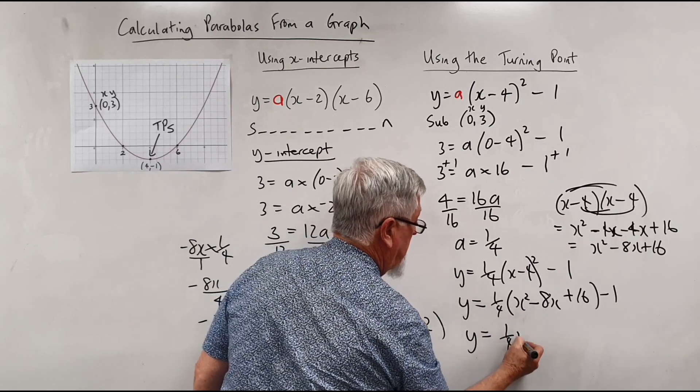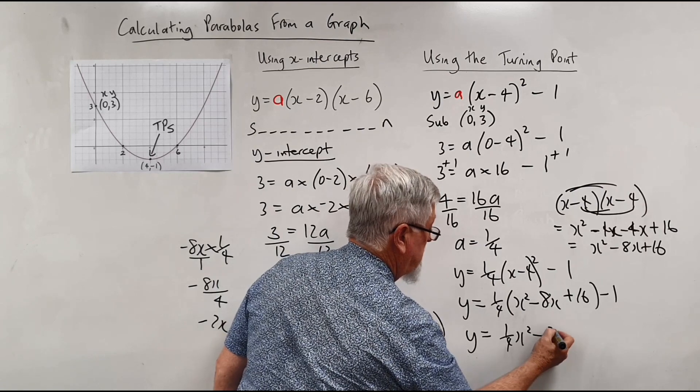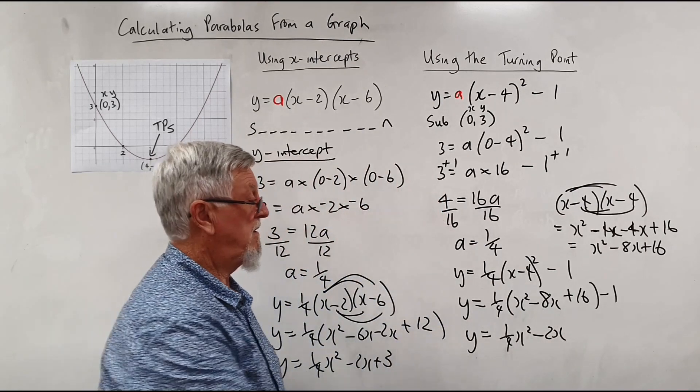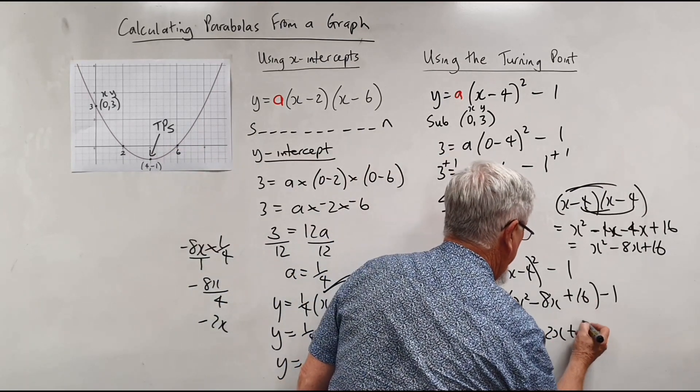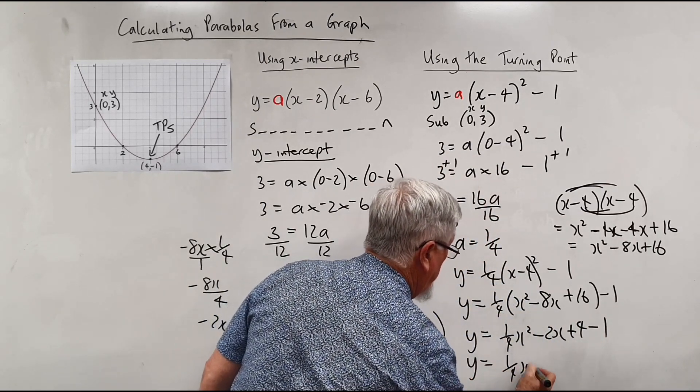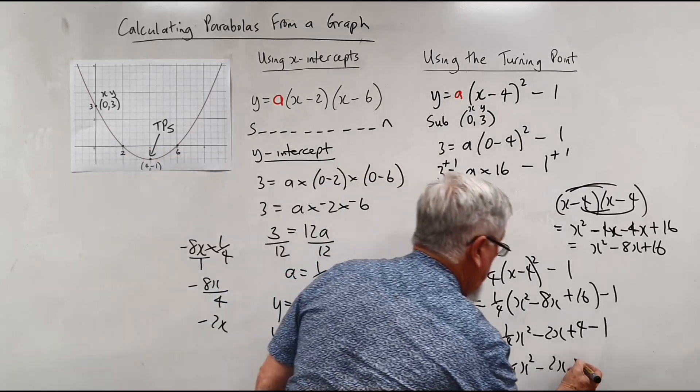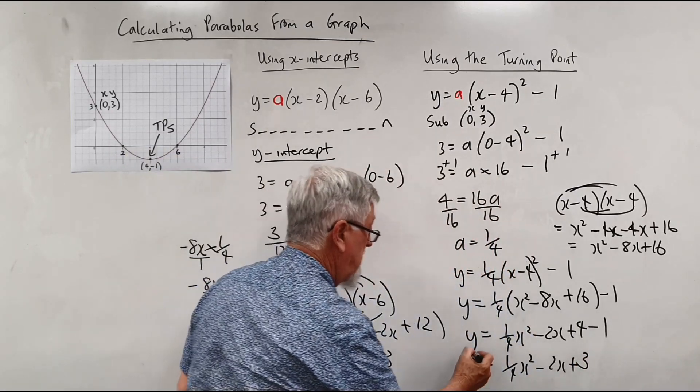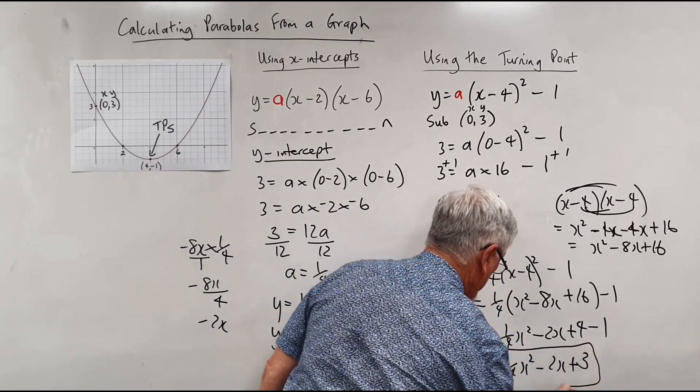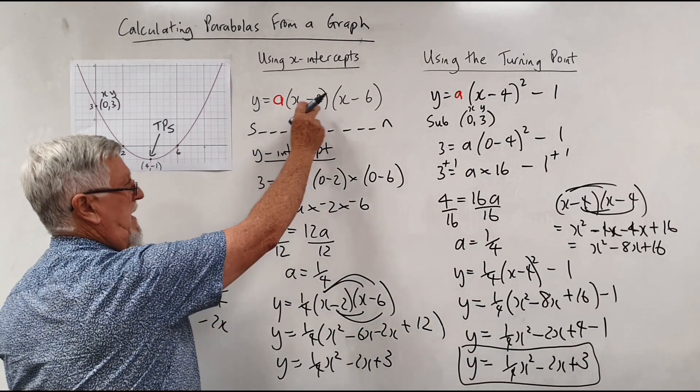So let's have a look at what happens. We've got a quarter of x squared. We've got a quarter of 8, which is minus 2x. We've got a quarter of the 16, so that's a 4, take the 1. And we end up with the same equation of quarter x squared minus 2x and there's your plus 3. So it really doesn't matter which method you prefer for doing it. I think I normally would default back to using the x-intercepts.